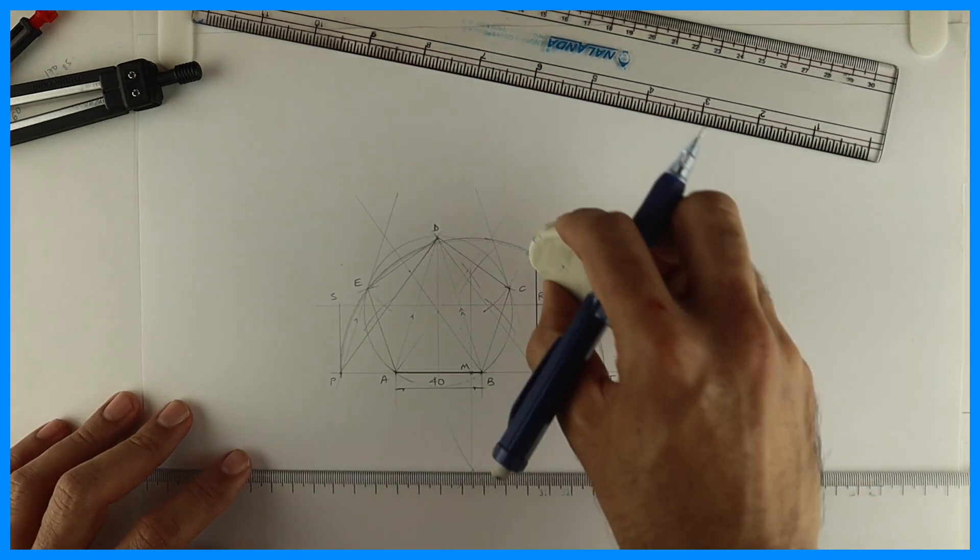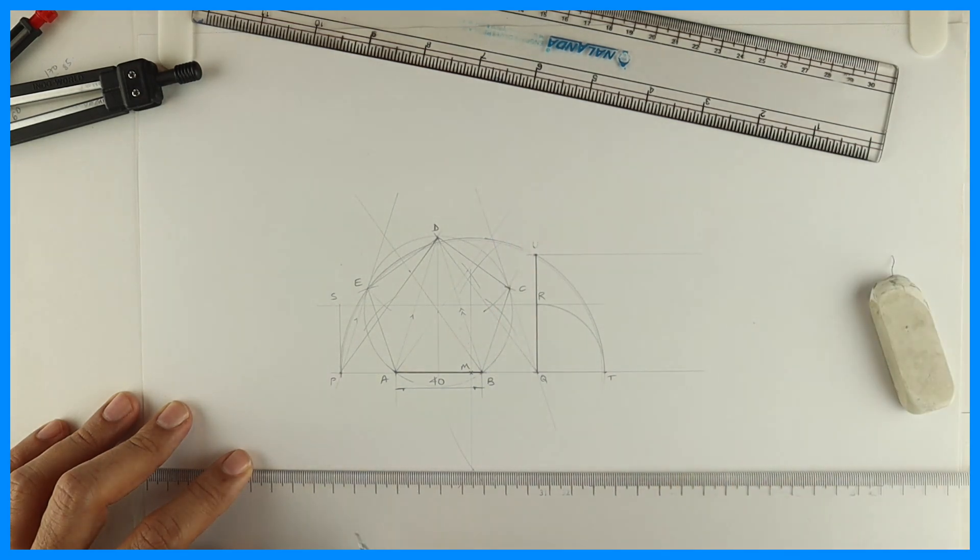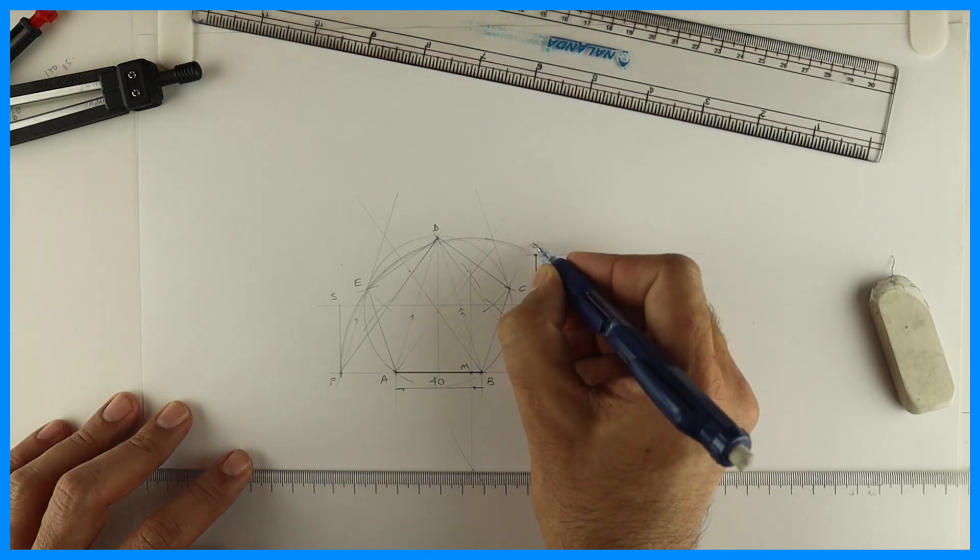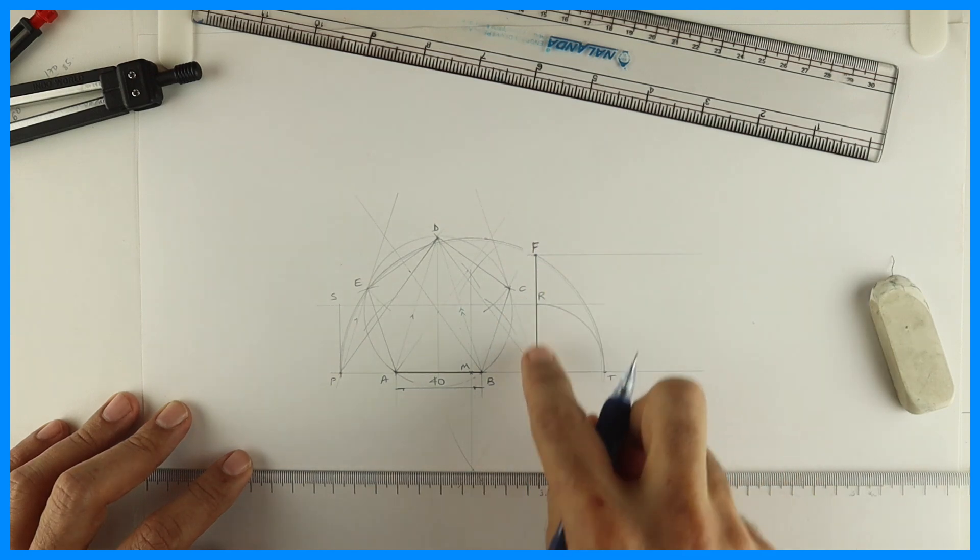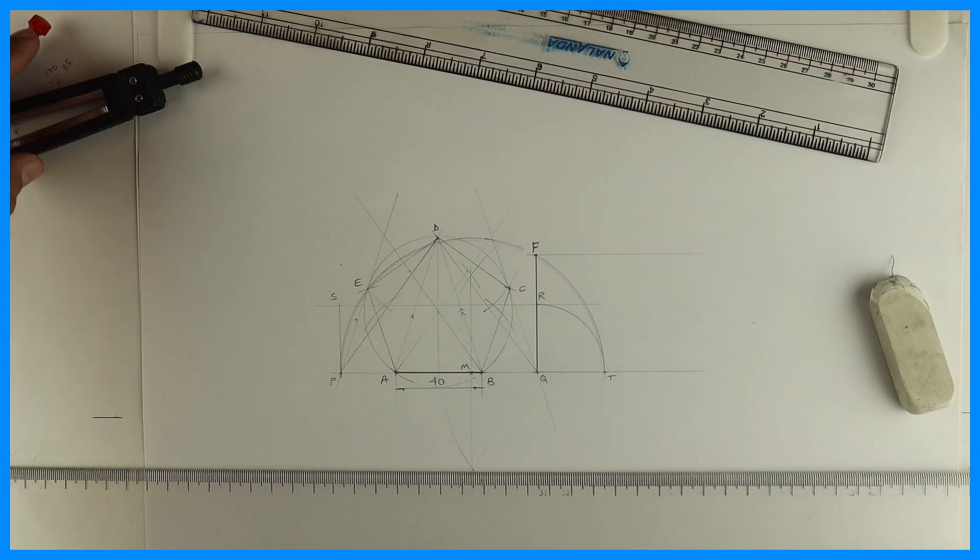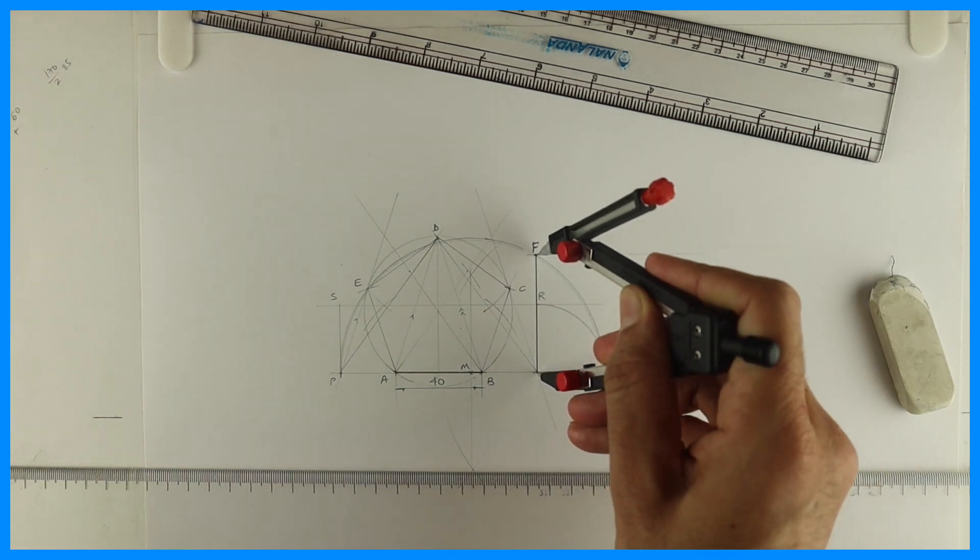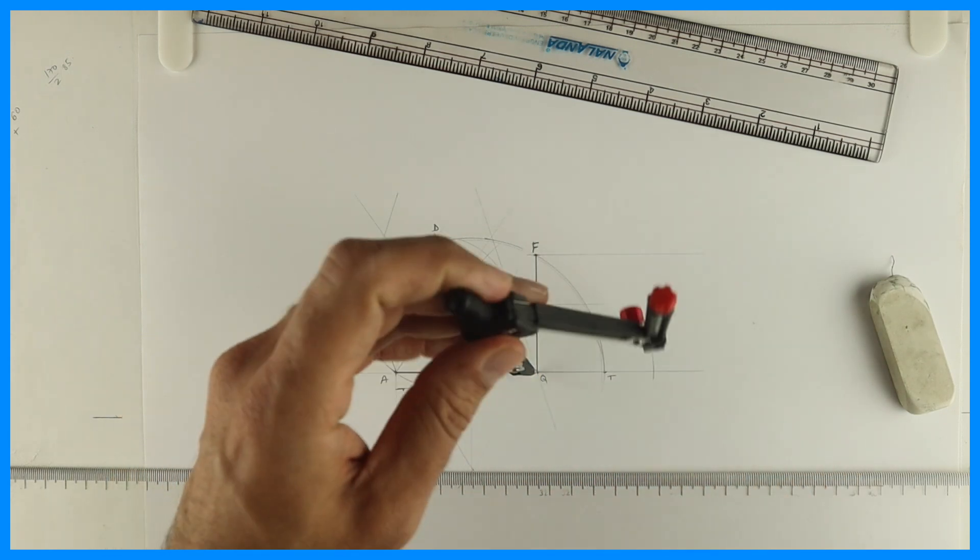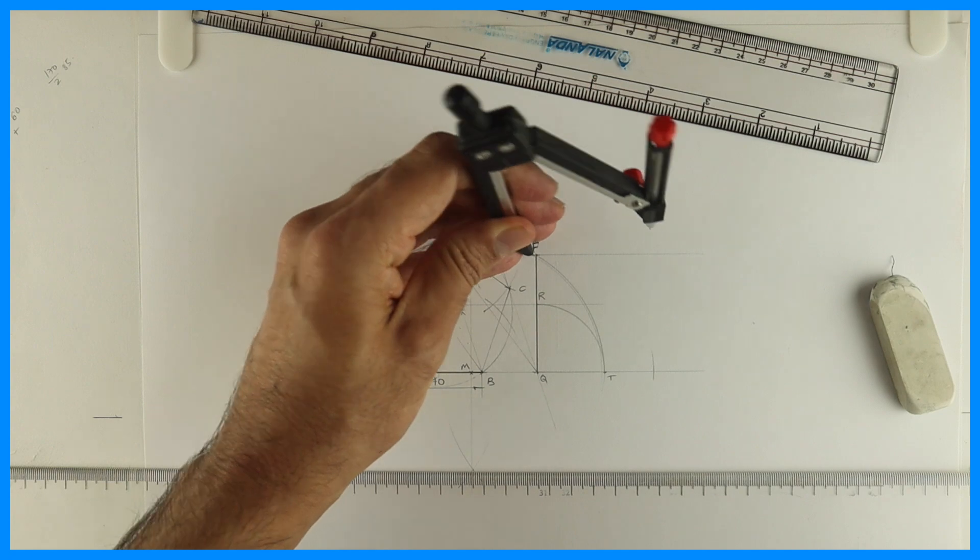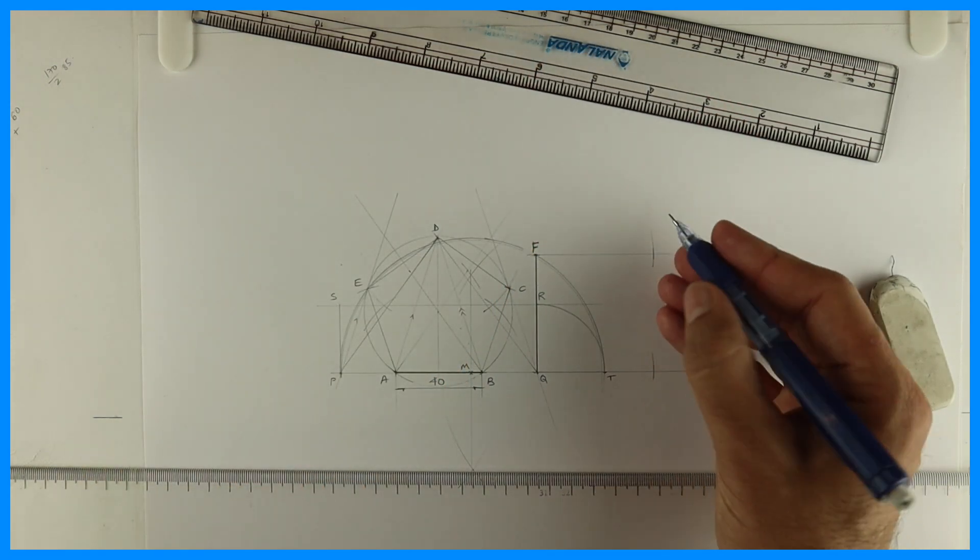Now we'll take this side and we'll cut. Or maybe I'll just change this name. Let's say F, so QF is the side of the square. We'll take that side and we'll cut on this side as well as this side.